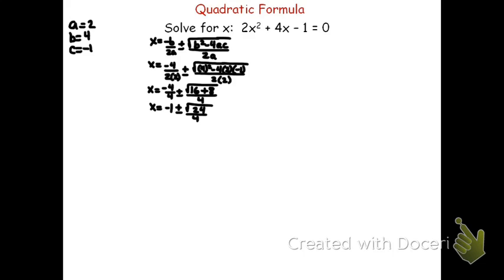We need to simplify the square root of 24, which is not a perfect square. Looking at the factors, 4 times 6 is 24, and 4 is a perfect square, so we can rewrite it as x equals negative 1 plus or minus 2 root 6, all over 4. Since 2 goes into 4 twice, we can simplify: x equals negative 1 plus or minus root 6 over 2. That's the exact answer — x equals negative 1 plus root 6 over 2, and x equals negative 1 minus root 6 over 2.